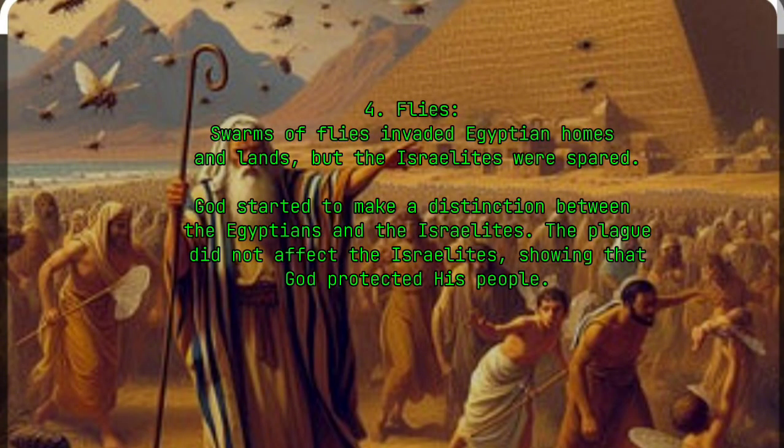4. Flies. Swarms of flies invaded Egyptian homes and lands, but the Israelites were spared. God started to make a distinction between the Egyptians and the Israelites — the plague did not affect the Israelites, showing that God protected his people.